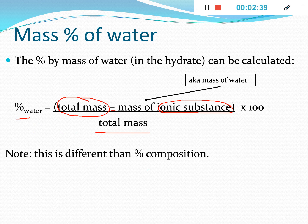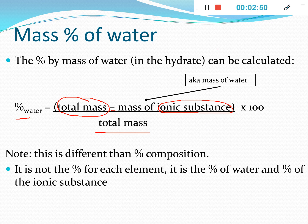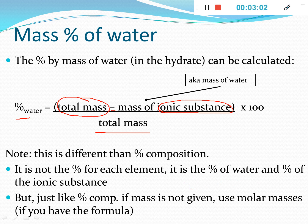Note that this is not the same as percent composition, because we're not doing it for individual elements — we are doing it for compounds. We're not working per element; we're working per ionic substance and per water, treating the whole ionic substance and the whole water molecule, not individual elements. Just like with percent composition, if we don't have the mass of a particular sample but we do have the formula, we can use the molar masses to find those percentages.